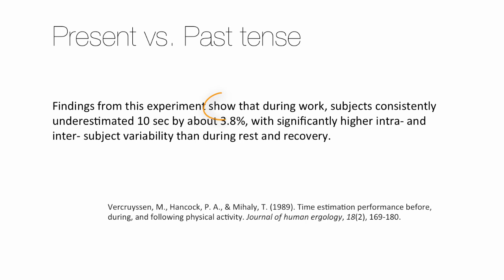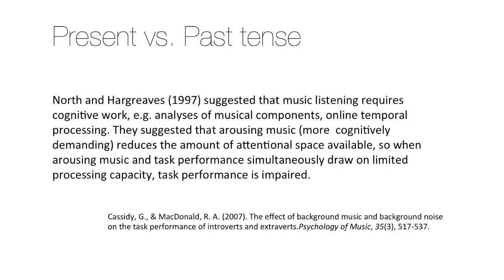Present tense is generally used when reporting the findings of the research, but past tense is used for the details of the experiment. The showing is happening right now in the paper, but the underestimating occurred when they actually did the experiment. Past tense is used when talking about what someone else did in their paper — for example, 'these guys suggested this' — but present tense is used for the general result of their study, which is a truth now: 'arousing music reduces the attentional space available.'